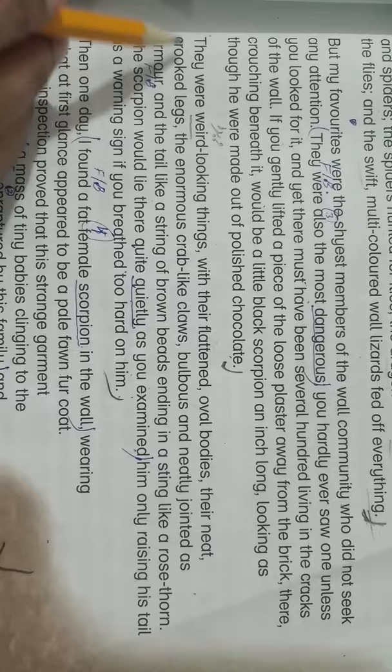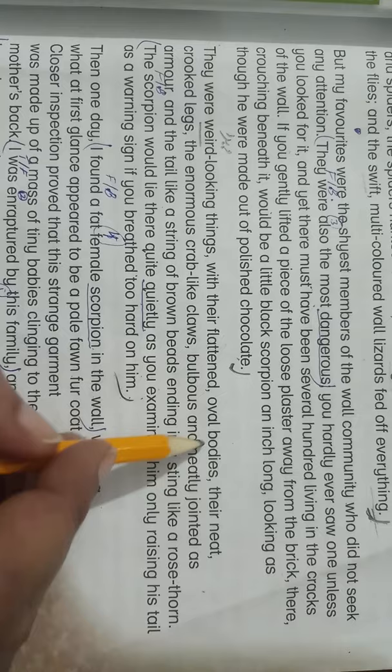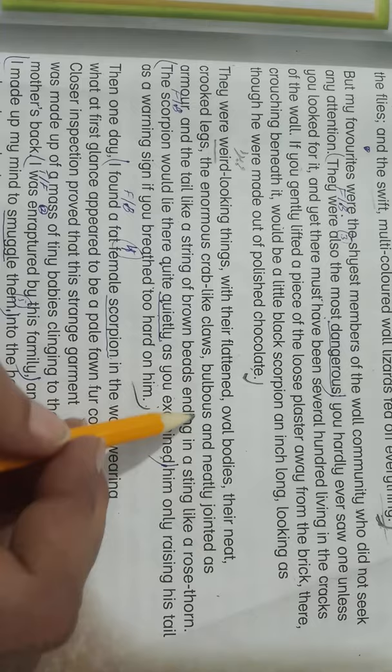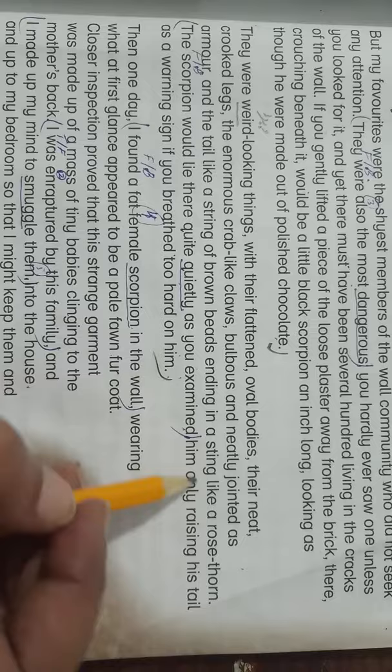They were oddly beautiful things with their flattened oval bodies, their neat crooked legs, the numerous curve-like claws bulbous and neatly jointed as armor, and the tail like a string of brown beads ending in a sting like a rose thorn.